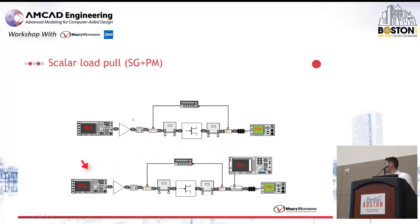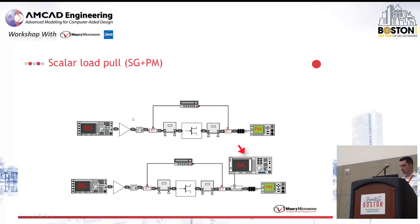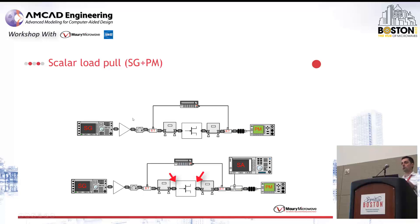You have signal generators and amplifiers for generating your test signal. You might have couplers at the input to measure power or spectrum. You have a source tuner, a device under test, and a load tuner. Then you have a power meter to measure power, or a spectrum analyzer if you want to do linearity measurements. A very important thing about this type of system is that since you're measuring power at this point, you need to know exactly what your tuner is doing. You need an accurate representation of your tuner to de-embed your measurements up to the device reference plane. This whole structure is based on the pre-characterization of the tuner measured offline with a vector network analyzer.